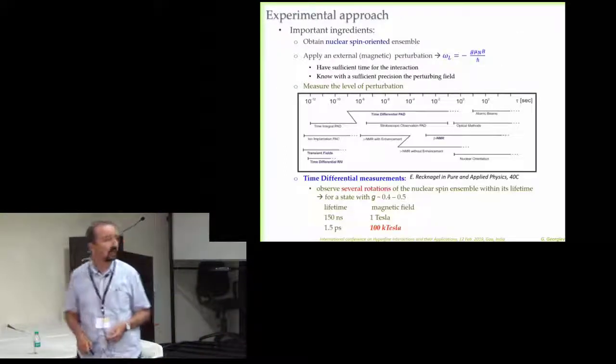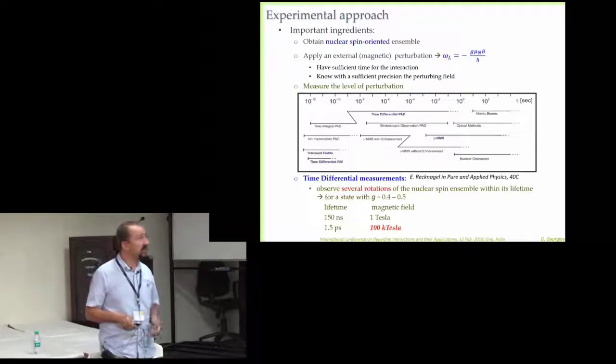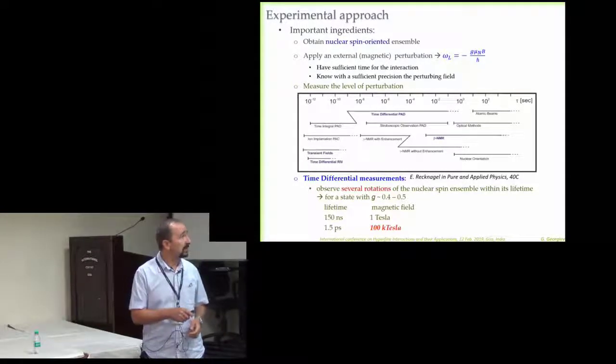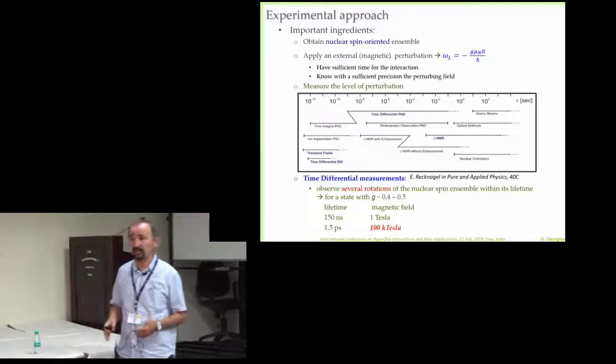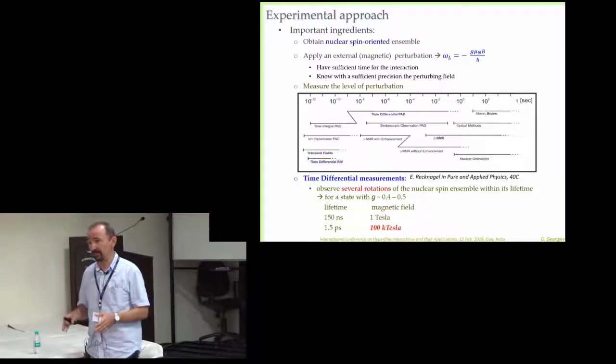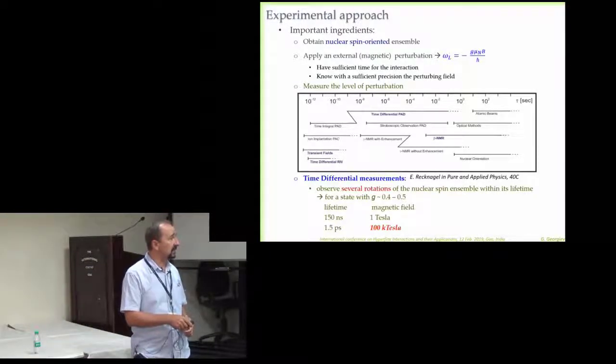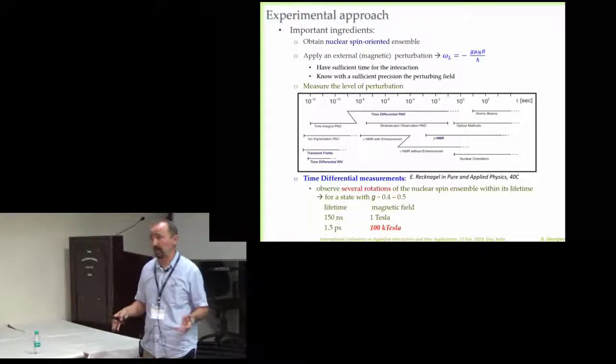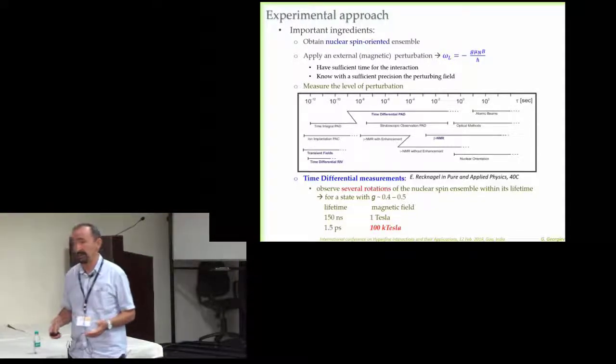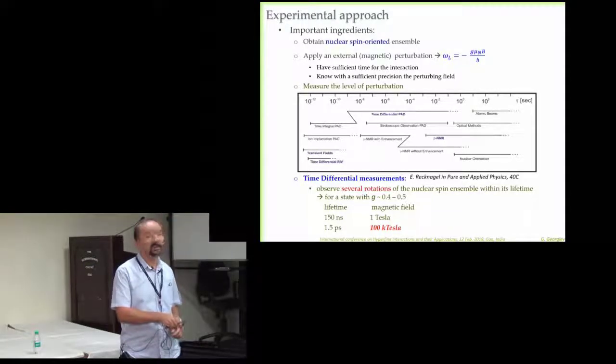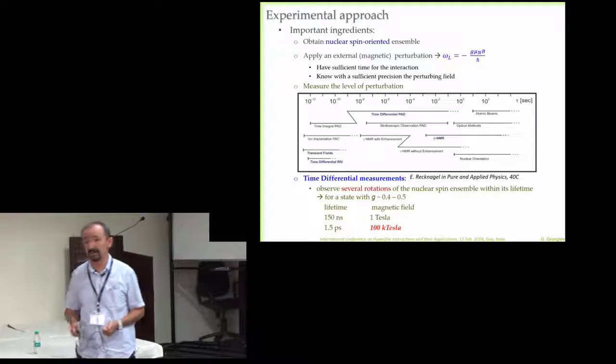On the techniques, we're talking about time differential techniques or time integral techniques. We have interaction between the oriented nuclear spins, some magnetic field, some perturbation. I'd like to point out that we're talking especially about very short-lived states, picosecond states. If you have a look just for numbers, if you have a nuclear state with 150 nanoseconds, this is typically an isomeric state, then about one tesla field is enough. However, if you go to the picosecond range, you need hundreds of kiloteslas, and that's something you cannot do with any macroscopic device. That's why you need to go to the hyperfine interactions, and that's where we start playing with it.